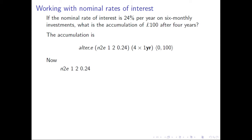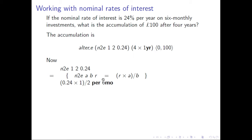Let's calculate this expression. n2e(1, 2, 0.24) — remembering that n2e(a, b, r) = r×(a/b) — equals 0.24×(1/2) per six months. We can simplify that to 0.12 per six months. So that's our effective rate: every six months, 12% interest is paid.